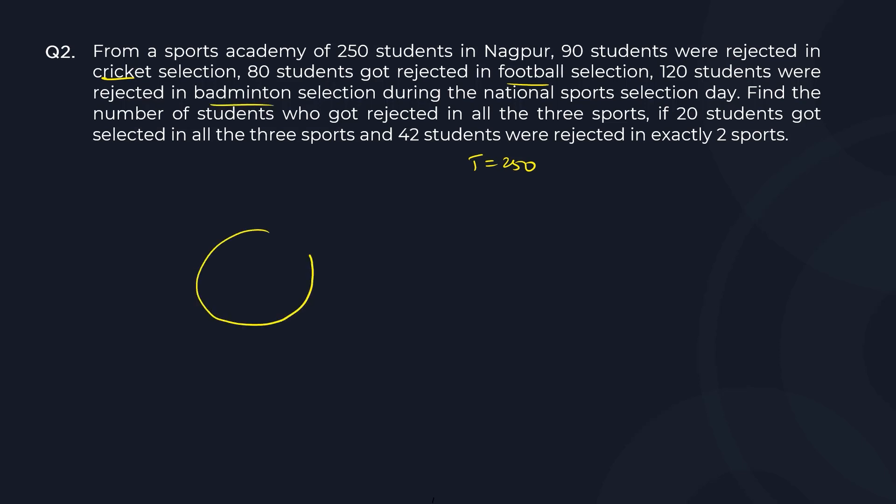Let me draw three: one, two, and three. Let's call this as cricket, football, and badminton. Now here, the circles represent the students who are rejected, not selected. So keep that in mind.